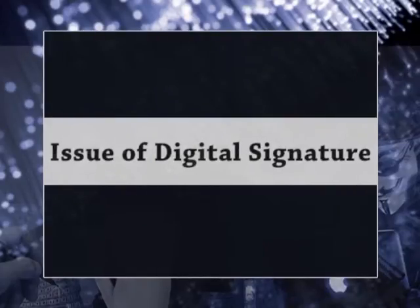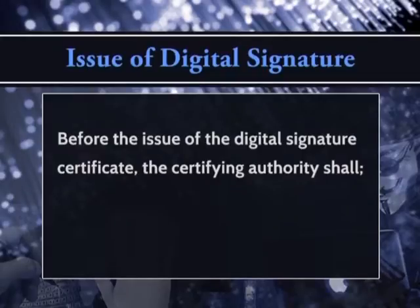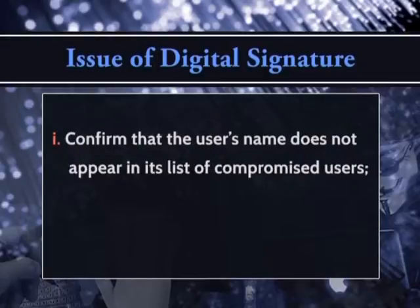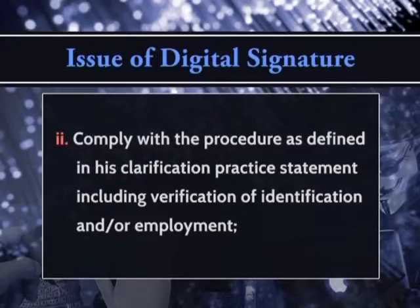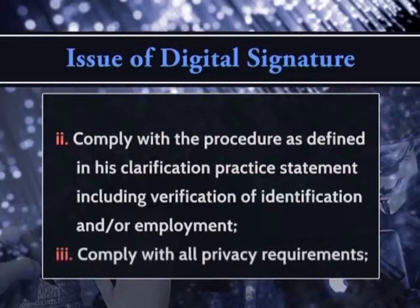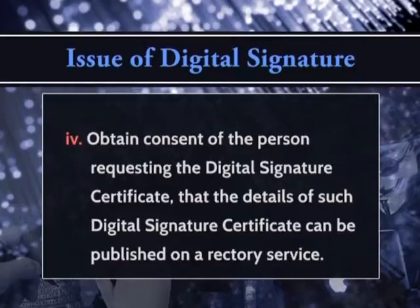Before the issue of a digital signature certificate, the certifying authority shall confirm that the user's name does not appear in the list of compromised users, comply with the procedures defined in its certification practice statement including verification of identification and employment, comply with all privacy requirements, and obtain consent of the person requesting the digital signature certificate that the details may be published on the directory service.